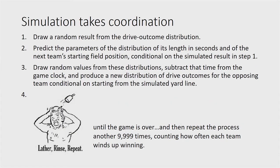So how do we stick these progressions together into a prediction? I forecast all the special teams stuff to get where each team will start the ball on each possession. I then used a package in R called GAMLSS that instead of giving you just a point prediction, gives you the parameters for a whole distribution that you can draw from. This is a four-step process: first, pick a result from the drive distribution; then, given that result — say a field goal attempt — predict the distribution of how much time it would have taken off the clock and where the next team would start their drive; draw random numbers from those distributions; subtract the resulting time off the clock, move the yard line, add to the score; and repeat every possession until the game is over — then do it all again 10,000 times.